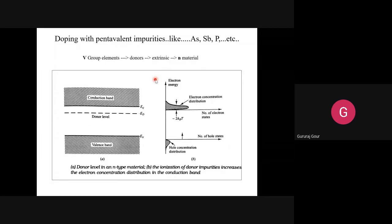Next, we make the pure crystal impure by doping pentavalent or trivalent impurities. Pentavalent impurities come from the fifth group of the periodic table and donate one extra electron. You can see that the Ed level — the band gap level — is slightly enhanced compared to the previous one, increasing the density of electrons in the conduction band jumping from the valence band.